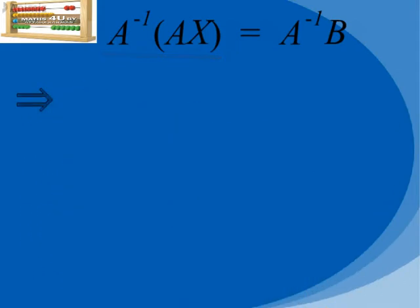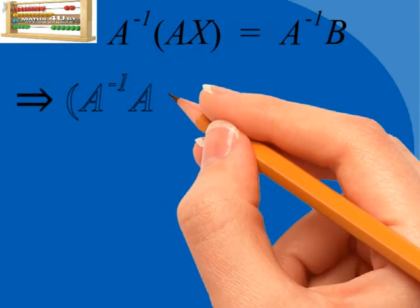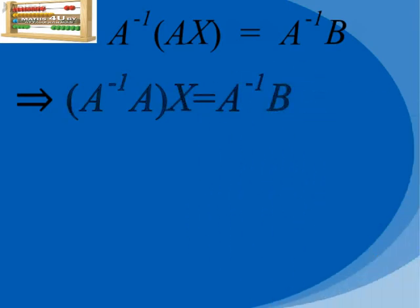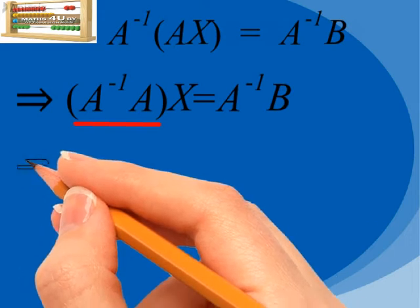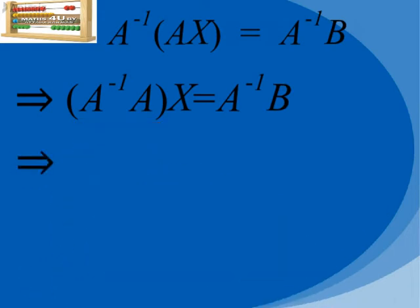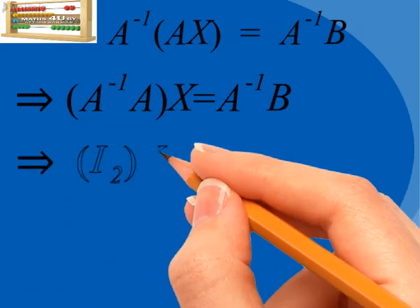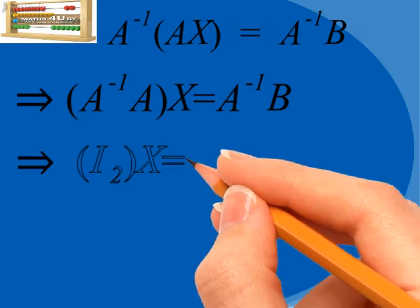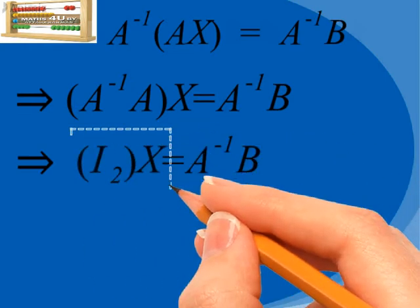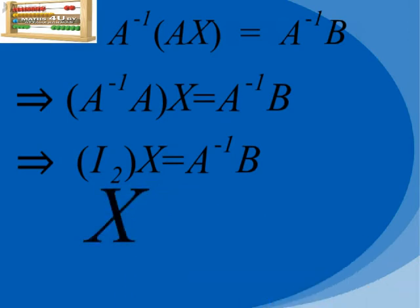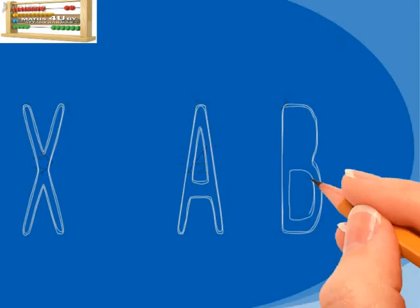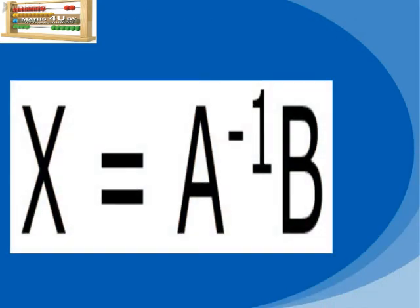Thus we have A inverse times A, along with X, is equal to A inverse times B. Since A inverse and A are multiplicative inverses of each other, their product gives the identity matrix of order 2. The product of the identity matrix and the matrix X gives back the matrix X. Thus we obtain the solution formula for the inversion method: X is equal to A inverse times B.